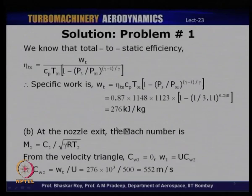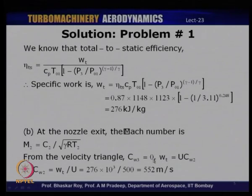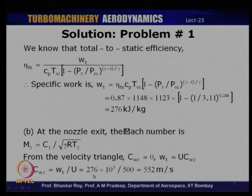For part (b), the Mach number at the nozzle exit, M2 = C2 / √(γRT2). We need to calculate C2 and the static temperature T2. Since the flow enters and leaves the stage axially, Cw3 = 0, and since Wt = U × (Cw2 − Cw3) with Cw3 = 0, we get Cw2 = WT / U = 276×10³ / 500 = 552 m/s.